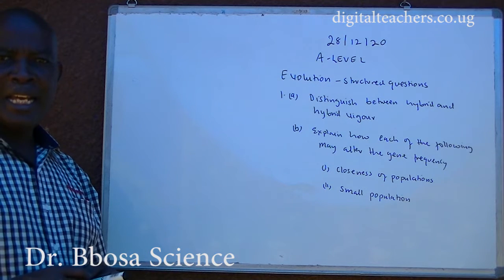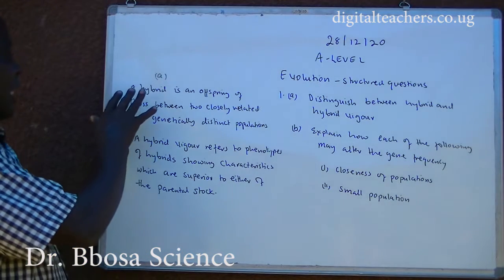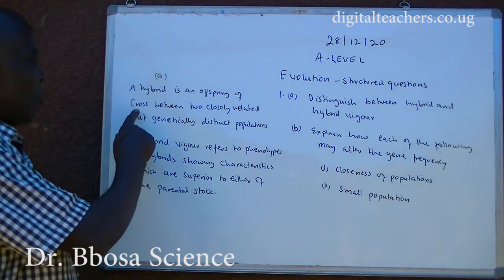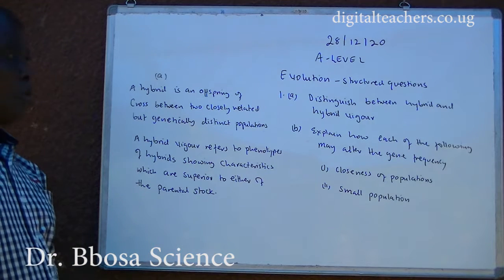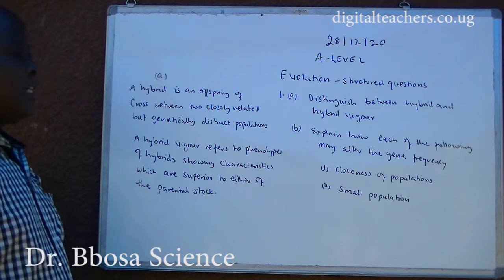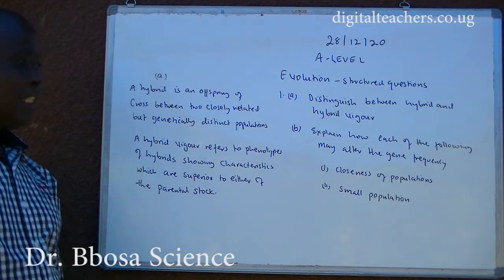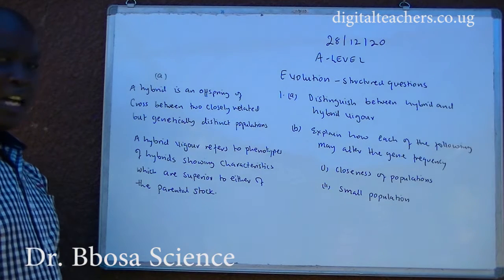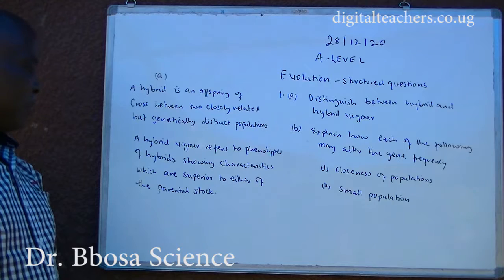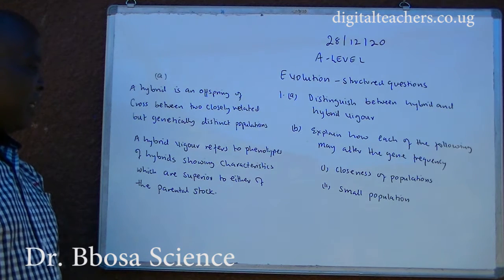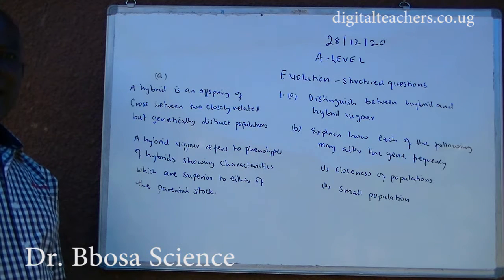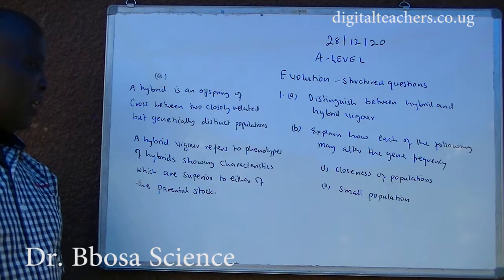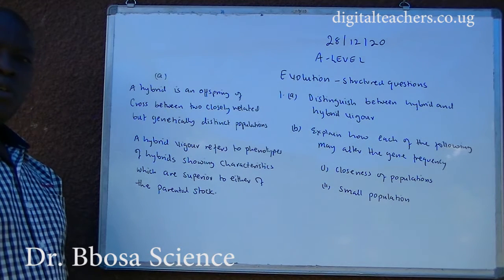You can pause and answer. A hybrid is an offspring of a cross between two closely related but genetically distinct populations.